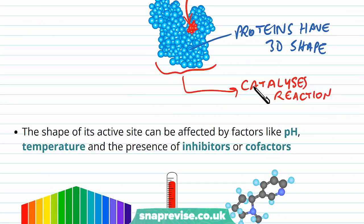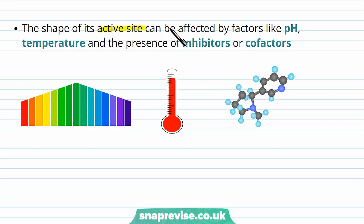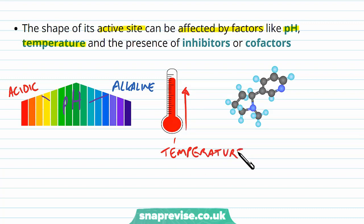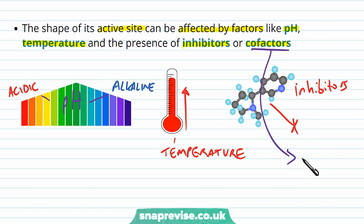The shape of the active site isn't always fixed — it can be changed by certain factors. These include the pH of the environment: pH can range from very high (alkaline) to very low (acidic), and the body controls pH tightly to maintain the right shape. Temperature also affects it — increasing temperature too far can denature proteins and change the active site, as can decreasing temperature. The presence of molecules called inhibitors or cofactors also matters: inhibitors stop enzymes from working, whereas cofactors can bind to active sites and actually improve their function.